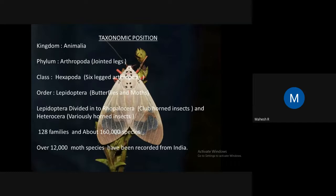There are about over 12,000 species recorded in India, but if you include the micro-Lepidoptera and have a stronger database, the count could be more than 150,000 species in India.